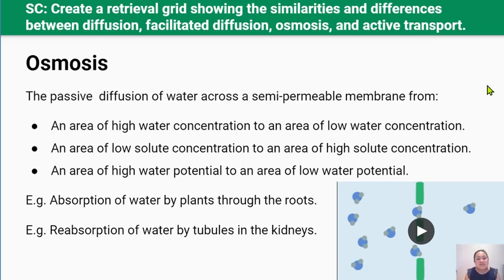As with simple diffusion and facilitated diffusion, the water molecules are moving down their concentration gradient. So osmosis doesn't require any energy from respiration to move water molecules down a concentration gradient. Therefore, it's a type of passive transport.